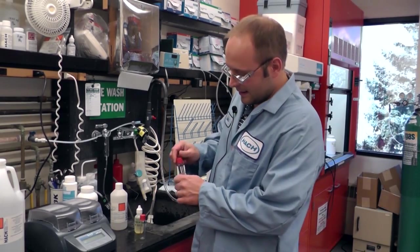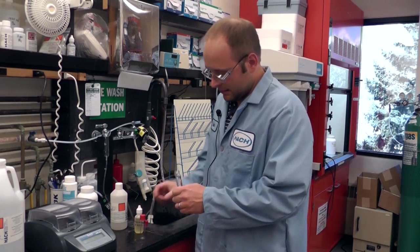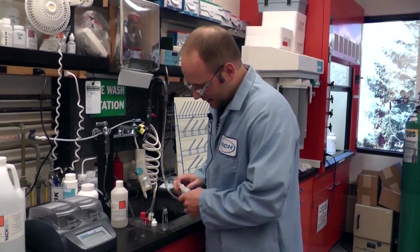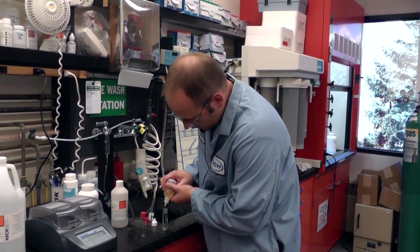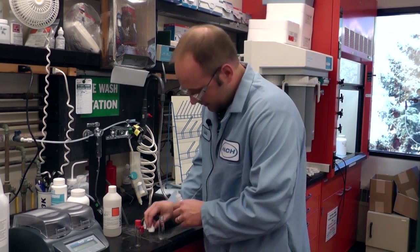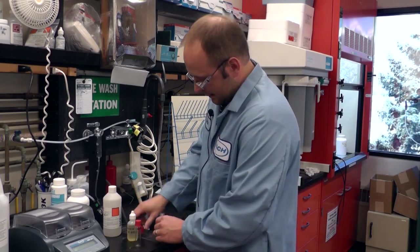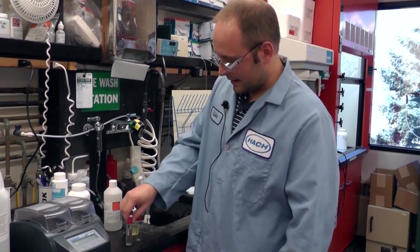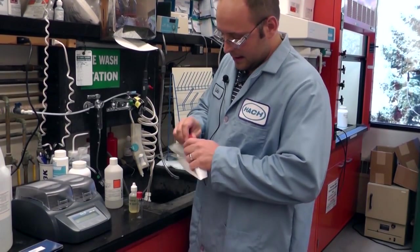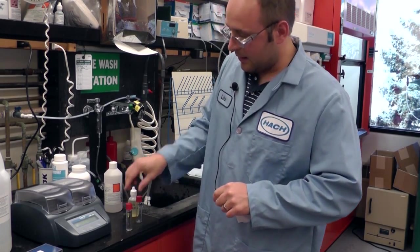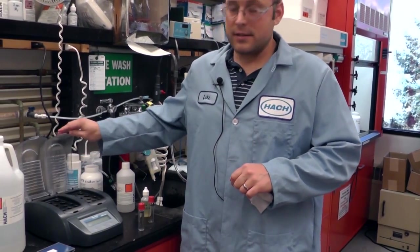So the next thing I'm going to do on this sample here is add 10 drops from this bottle of the ferrazine reagent right in here. I'm going to cap it up, invert it a couple times to make sure it's well mixed. I'm going to take a paper towel and make sure that the outside of the vial is dry and then I'm going to digest it in the DRB 200 block here at 150 degrees for 30 minutes.